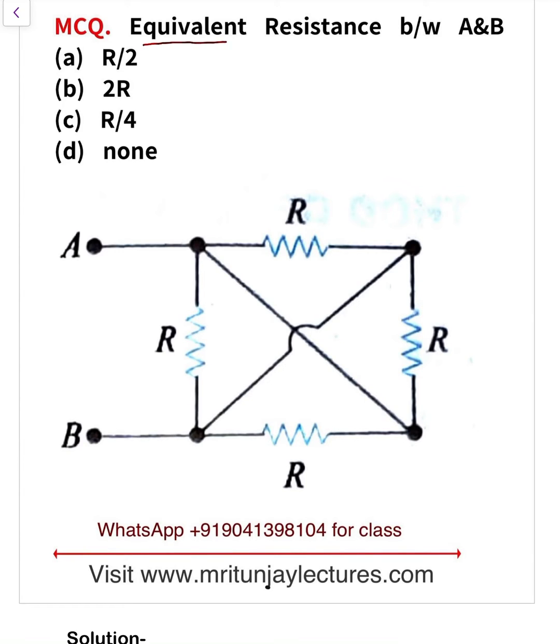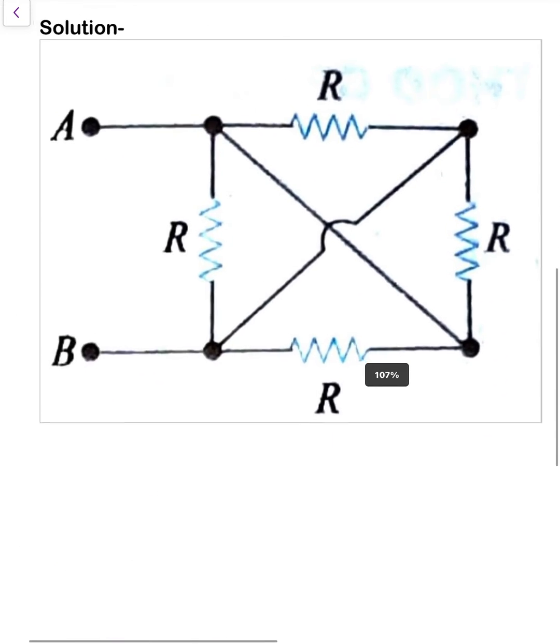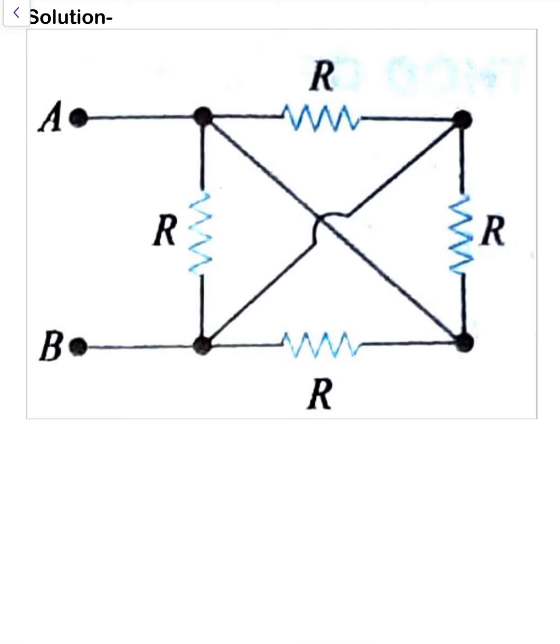Now let's determine equivalent resistance between A and B. How can we determine that? That point is A and that point is B. So how can we determine? If you see carefully, that point is this one is A.